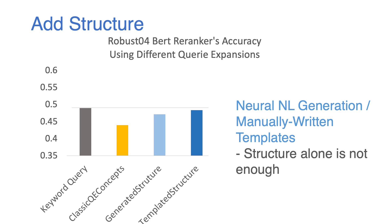Next, we investigate the effects of adding pure structures to a keyword query. We try two different methods, shown using the blue bars. The first uses a neural machine translation method to generate fluent English queries from the initial keyword queries. The other uses manually defined templates to map a keyword query into a natural language query. Both methods do not add new concepts to the query. As we can see, they cannot outperform the keyword query either. This experiment shows that structure alone is not sufficient for BERT re-rankers.